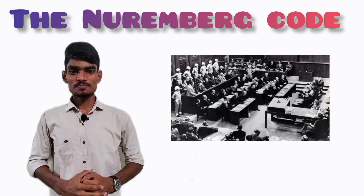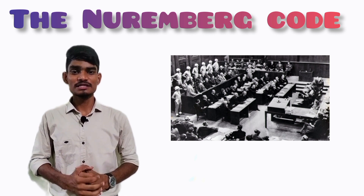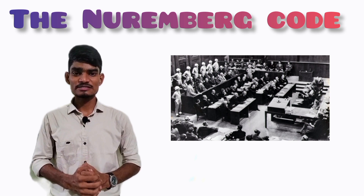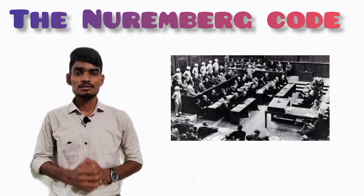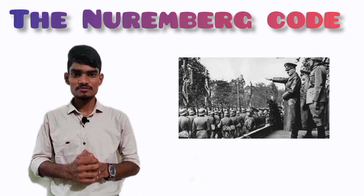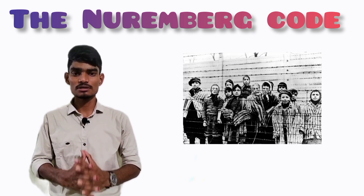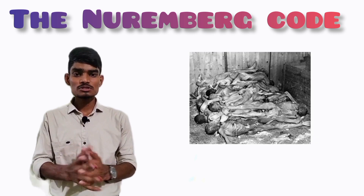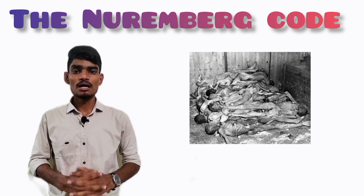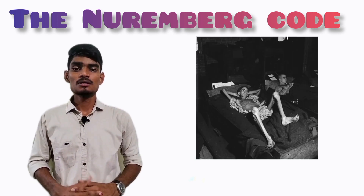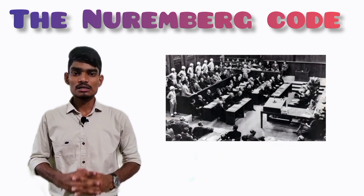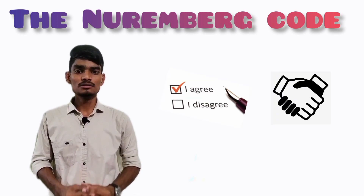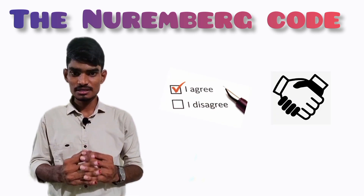The Nuremberg Code is a set of ethical principles and guidelines for conducting medical experiments on human subjects. It was developed in 1947. During the Second World War, German physicians conducted medical experiments on thousands of concentration camp prisoners without their consent. Most of the camp prisoners died and some were permanently crippled. As a result, the Nuremberg Code emphasizes the importance of informed consent and voluntary participation in medical experiments.